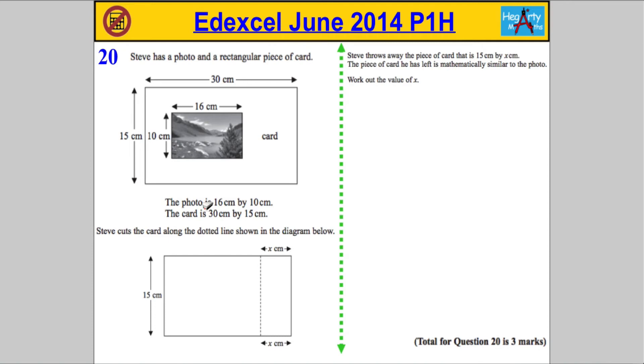Question 20 tells us that Steve has a photo and a rectangular piece of card. The dimensions of the two shapes are given below. The photo is 16 centimeters by 10, and the card is 30 by 15. Steve is going to cut along this dotted line in the diagram shown below.